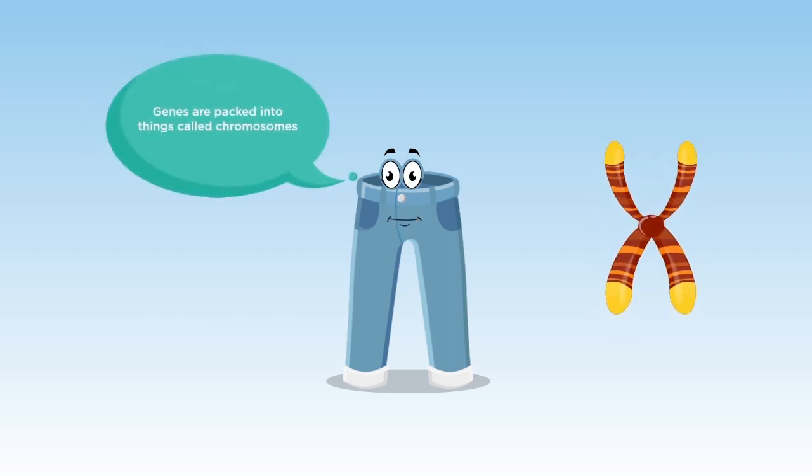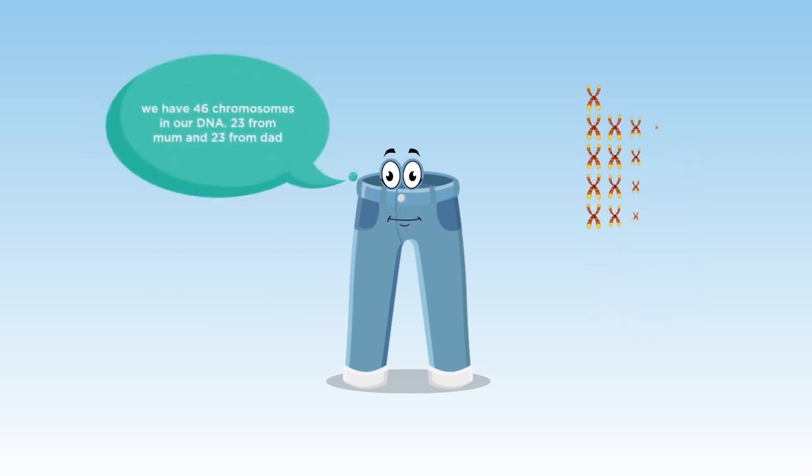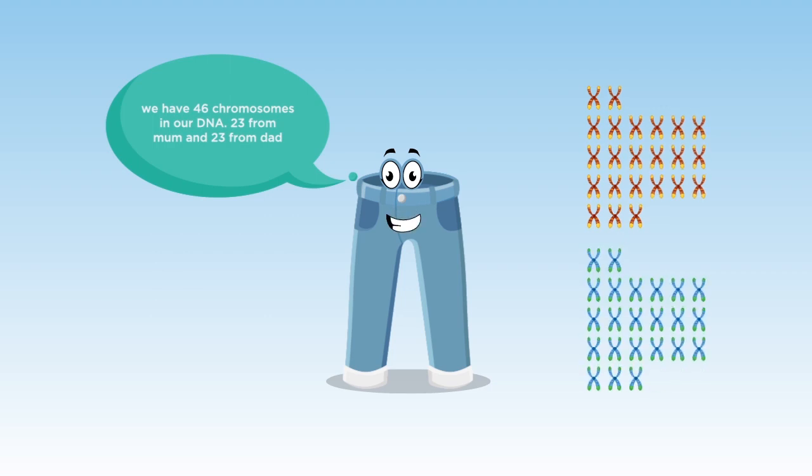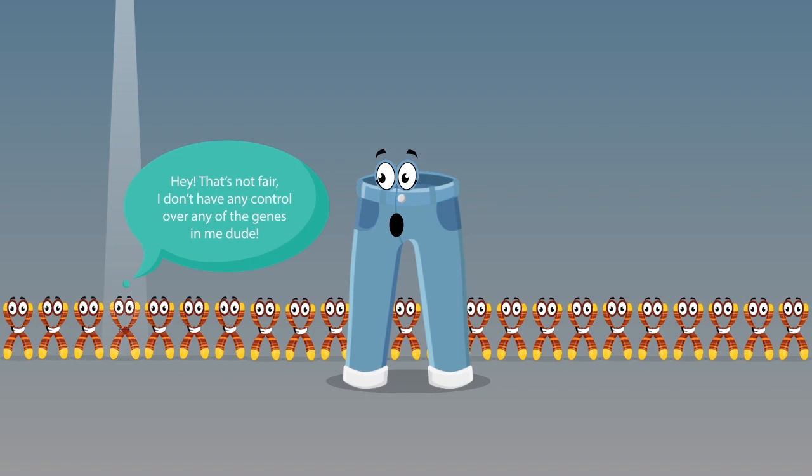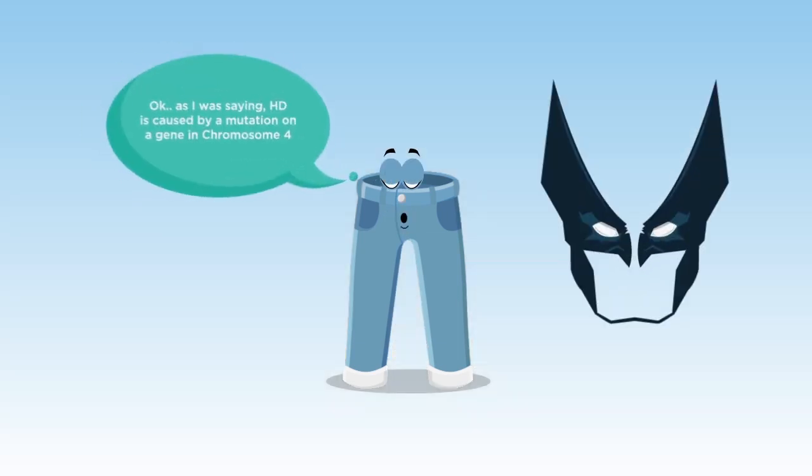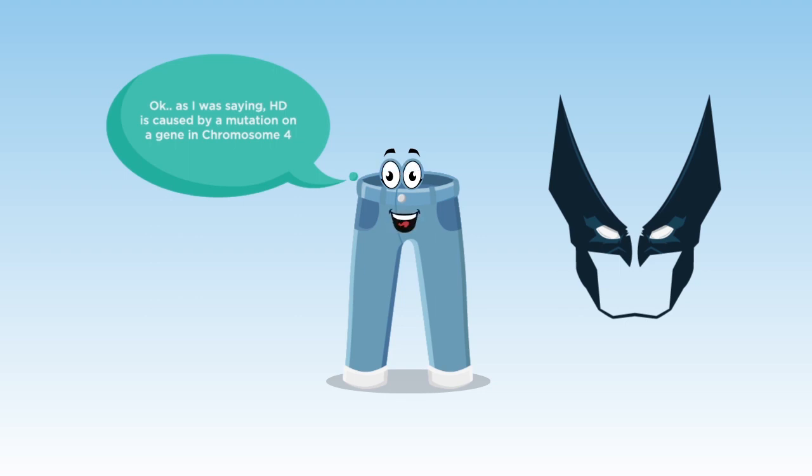Genes are packed into things called chromosomes. We have 46 chromosomes in our DNA, 23 from mom, and 23 from dad. We know that HD is caused by a gene on the fourth chromosome. That's not fair. I don't have any control over any of the genes in me, dude. Okay, as I was saying, HD is caused by a mutation on a gene in chromosome 4.